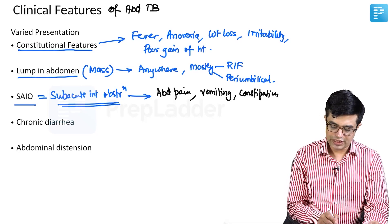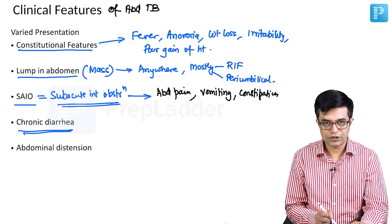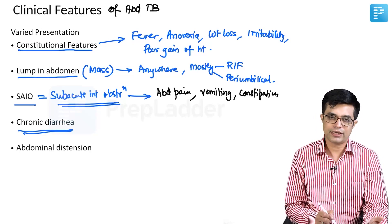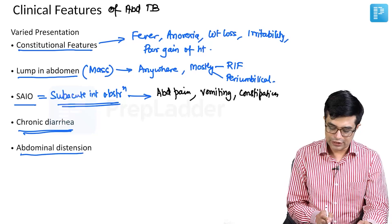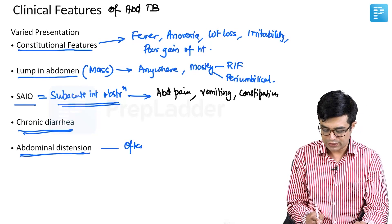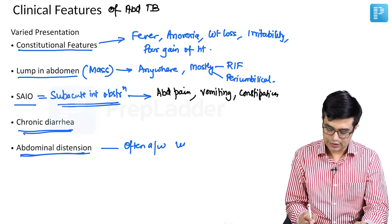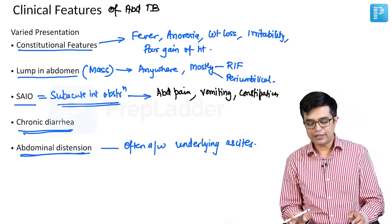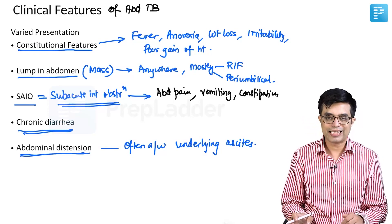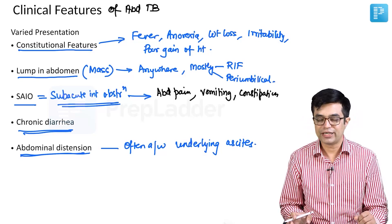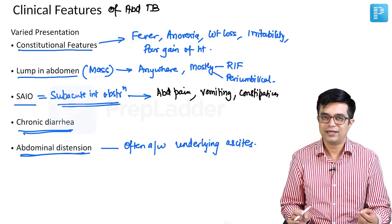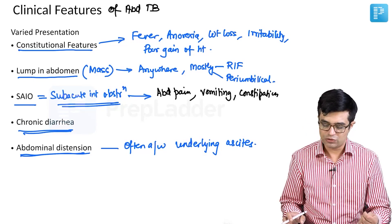Chronic diarrhea can be seen in some of these individuals, but it is usually a non-bloody diarrhea. And then finally, abdominal distension — it is often associated with underlying ascites. This is the typical clinical picture. As you can well imagine, similar presentation can be seen in many other GI conditions, so a high degree of suspicion is needed to identify these individuals.